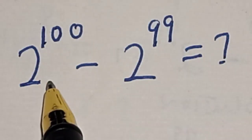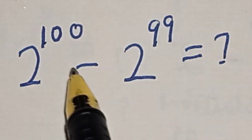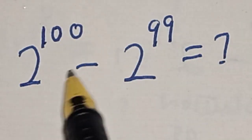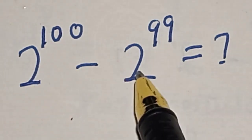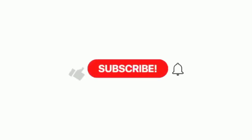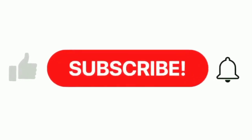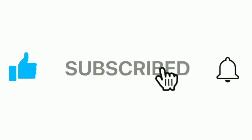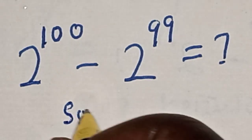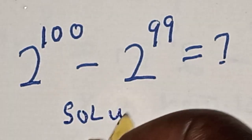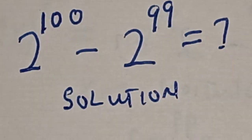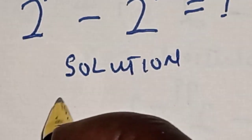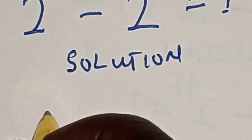Hello, welcome to Math Gist. In this class we want to evaluate this math problem: 2 raised to power 100 minus 2 raised to power 99 is equal to what. Like, share, comment and subscribe. The given equation is: